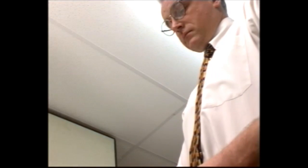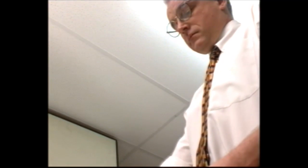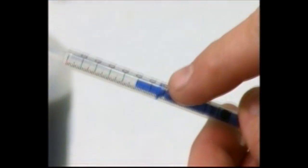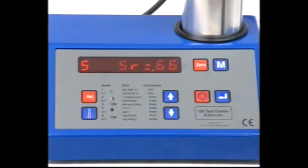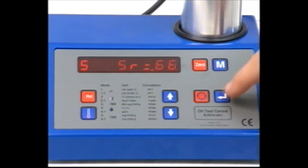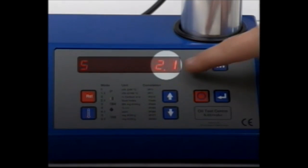Press return on the unit and use the speed and arrow keys to enter the syringe reading. Press return again to see the TAN displayed.